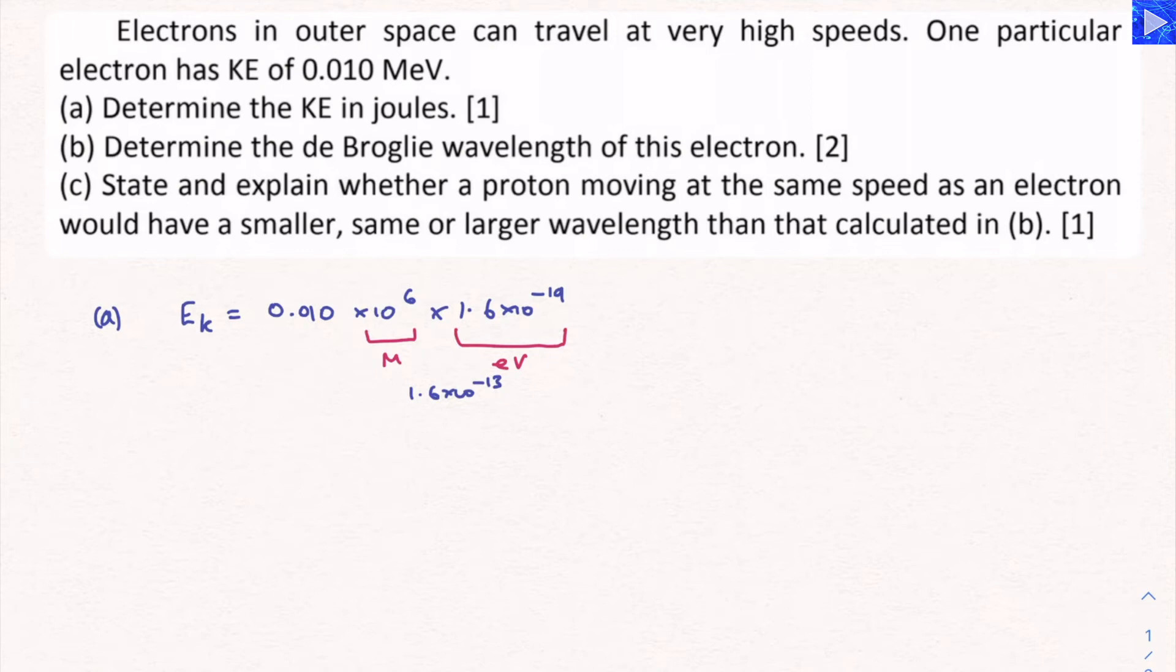So you might want to remember the conversion value, 1.6 times 10 to the minus 13 for mega electron volts. So when we do that, we're going to get 1.6 times 10 to the minus 15 and that's in joules. Okay, so that's our kinetic energy done.